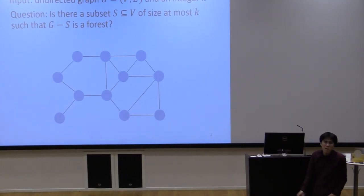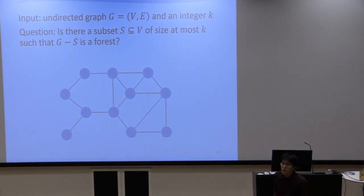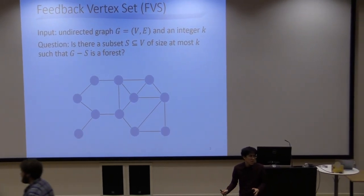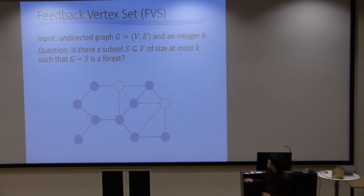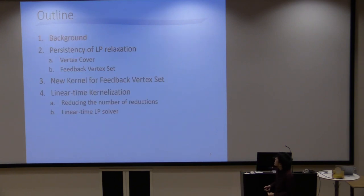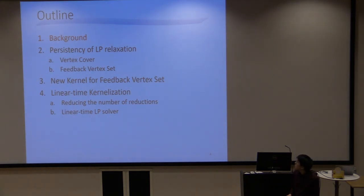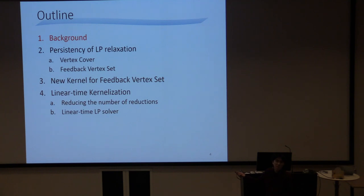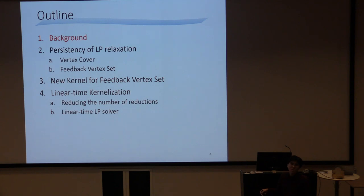This is the famous problem called feedback vertex set. We are given an undirected graph and a parameter k, and our task is to delete at most k vertices so that the remaining graph becomes acyclic. I will present a background of this research, then introduce an important concept of LP relaxation called persistency. By exploiting this persistency property, we obtain a new kernel for feedback vertex set that can be computed in linear time — linear in the graph size, but polynomial in the parameter k.